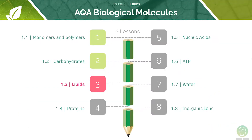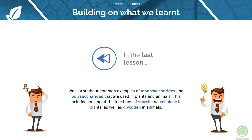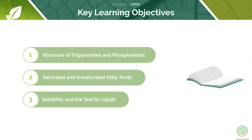This is the third lesson in our series of 8 videos on the topic of biological molecules. In the last lesson, we looked at common monosaccharides and polysaccharides. Here are the key learning objectives for today's lesson. The first is to look at the structure of triglycerides and phospholipids, then move on to fatty acids and the tests for lipids.